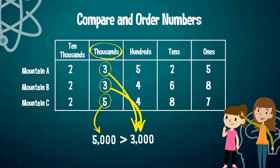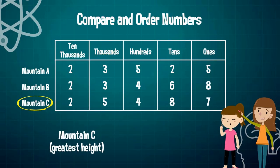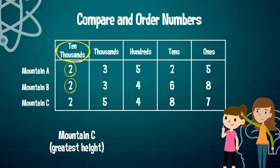How about Mountain A and Mountain B? Well, we can continue comparing the digits within these two numbers to identify the next largest number. We already saw that Mountain A and Mountain B have a digit of two in the ten thousands and a digit of three in the thousands place. Let's move on to the hundreds.